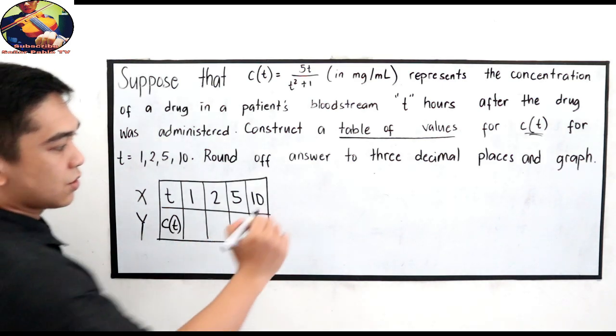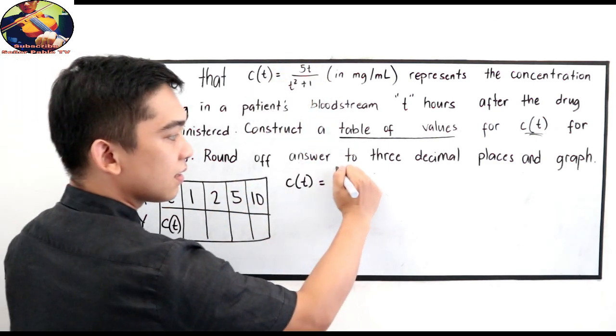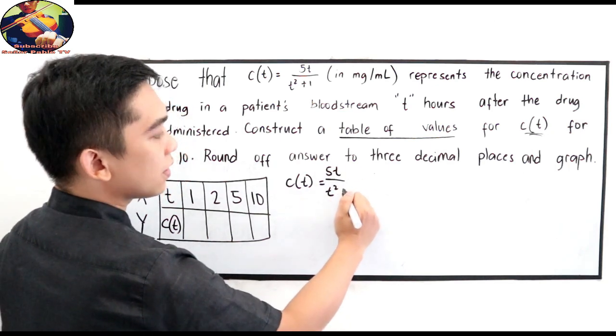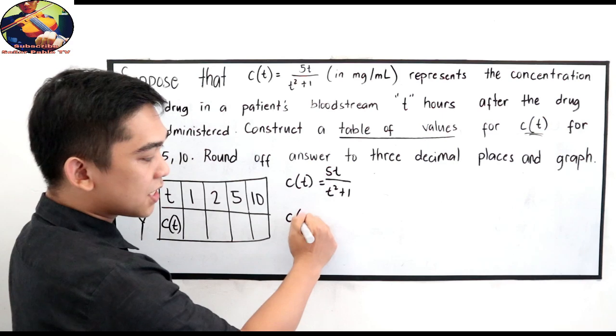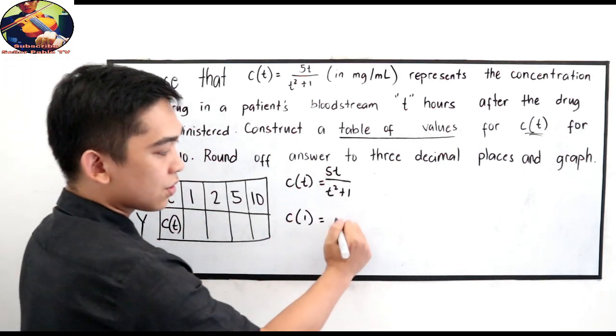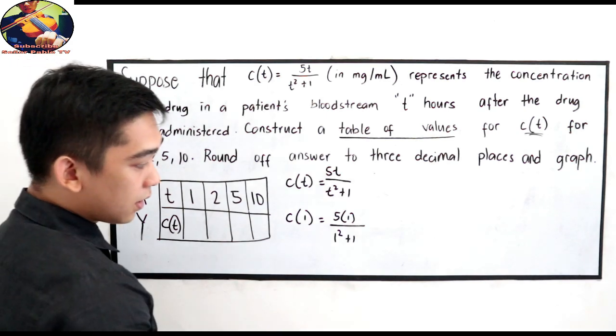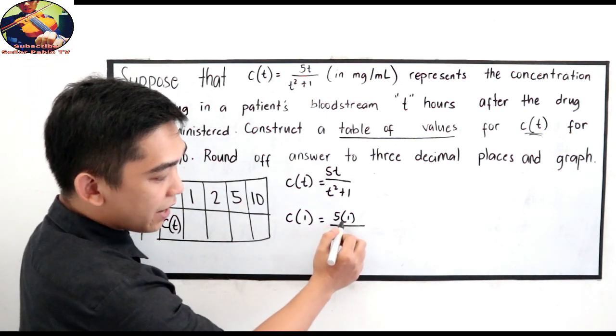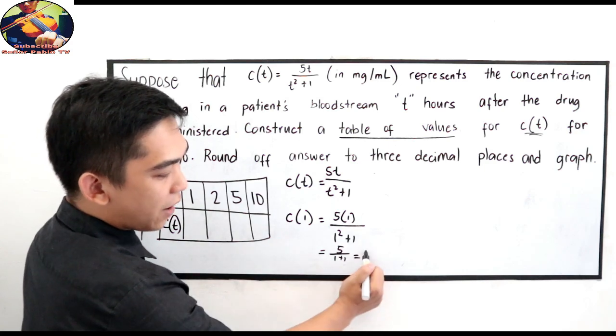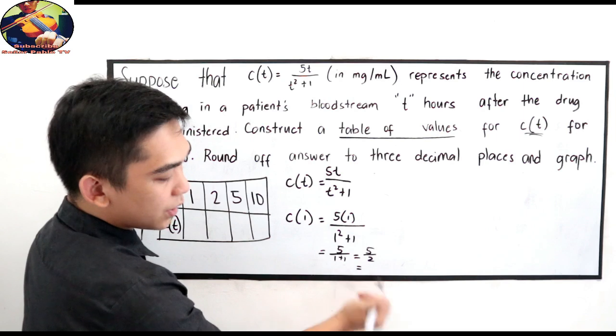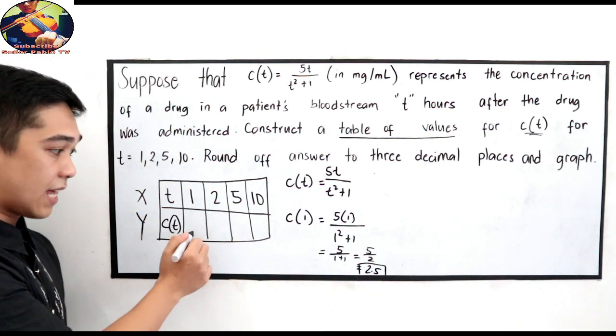Hanapin natin si c of t. Substitute natin ngayon. C of t is equal to yung rational function natin, 5t all over t squared plus 1. I-substitute lang natin gamit yung mga hours natin sa value ni t. If I have c of 1, 1 hour, that is 5 times 1 all over 1 squared plus 1. Simplify natin. 5 times 1, 5 over 1 squared plus 1, that is 5 over 2. 5 divided by 2 is 2.5. Sa table of value natin, lagay natin dito si 2.5.